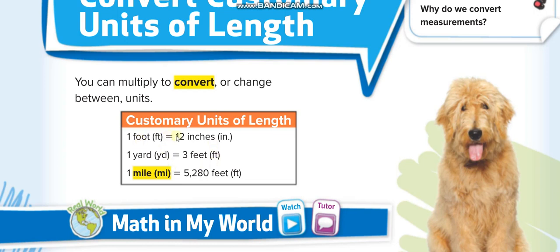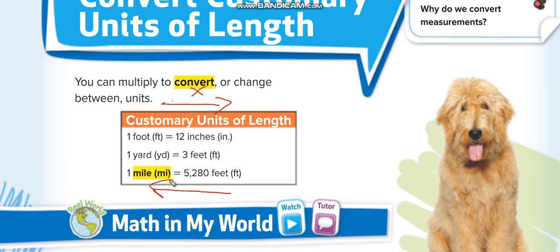In customary units you have to memorize three key facts: one foot equals 12 inches, and one yard equals 3 feet. When converting from a larger unit to a smaller unit, you multiply. When converting from a smaller unit to a larger unit, you divide.